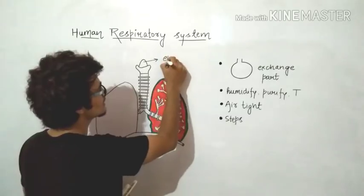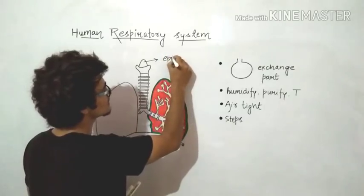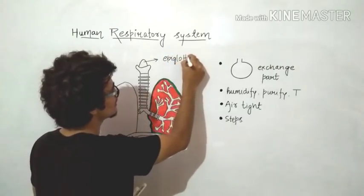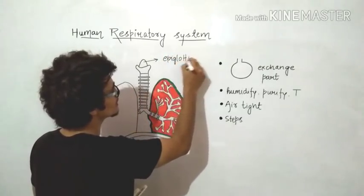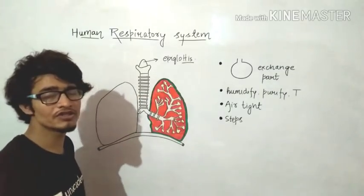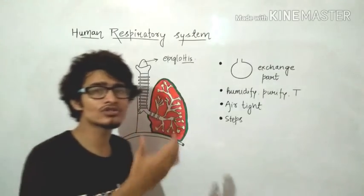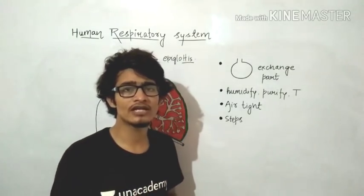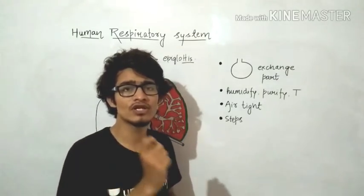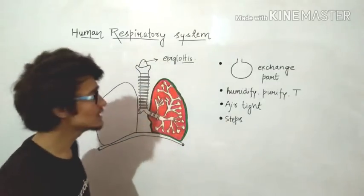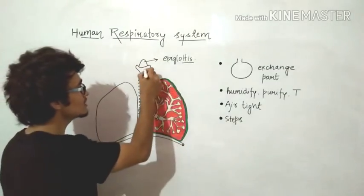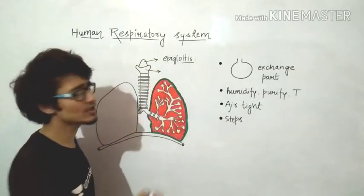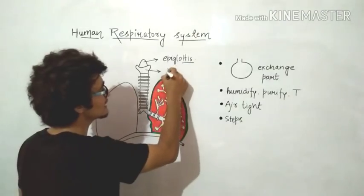This upper cartilaginous flap-like structure is known as the epiglottis, which closes during the swallowing process so that food will not enter the voice box. The voice box is also known as the larynx, which is also cartilaginous in nature.